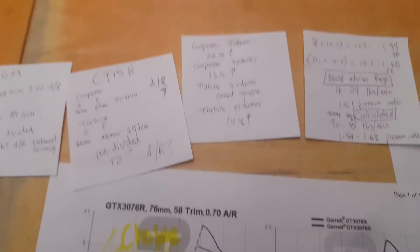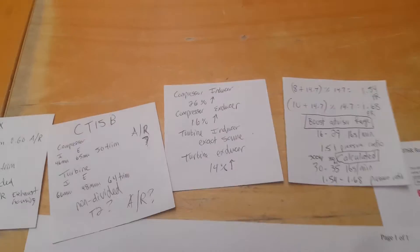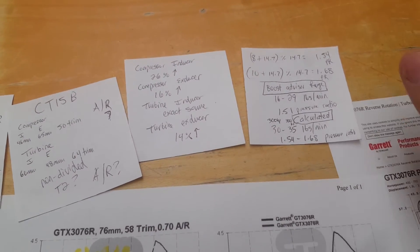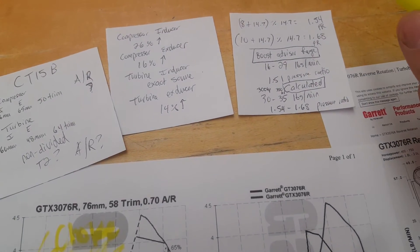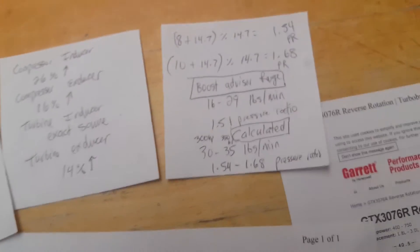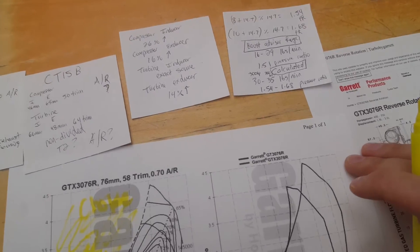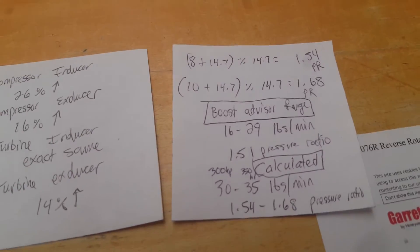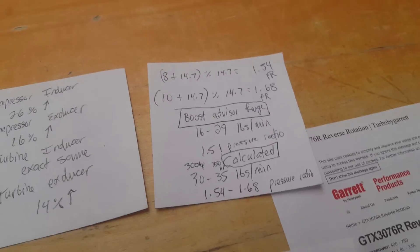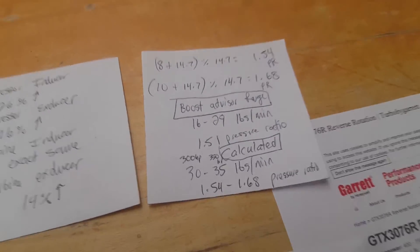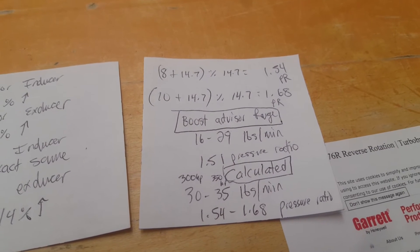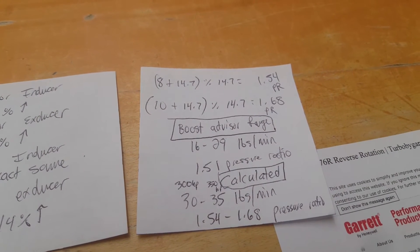Basically, with the low boost, you have to run a larger wastegate. So I chose the Tial 44 millimeter. They do sell 38, so I wouldn't recommend getting a 38 if you're going to run 8 to 10 pounds like I am. I have some friends running 50 millimeter wastegate, the TurboSmart, just to combat boost spike and keep the turbo equal and where they need for their power and no inefficiencies, things like that.